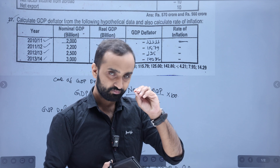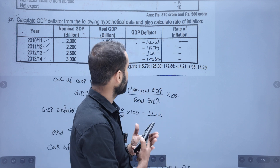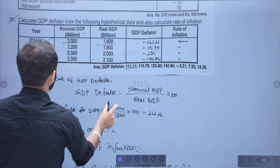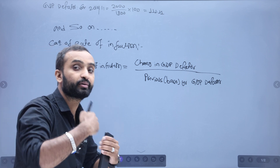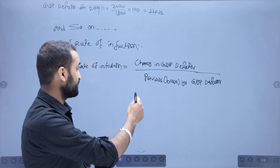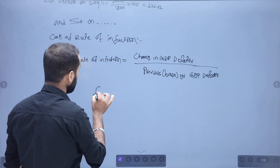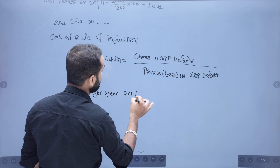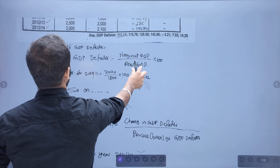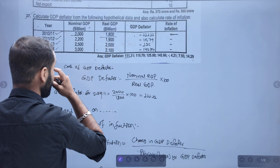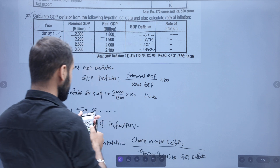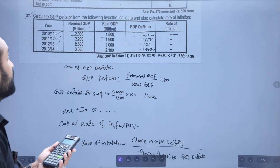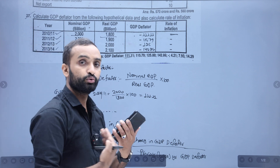We have to take this value relative to the previous year's GDP deflator. For year 2011, we apply this formula to find the rate of inflation.